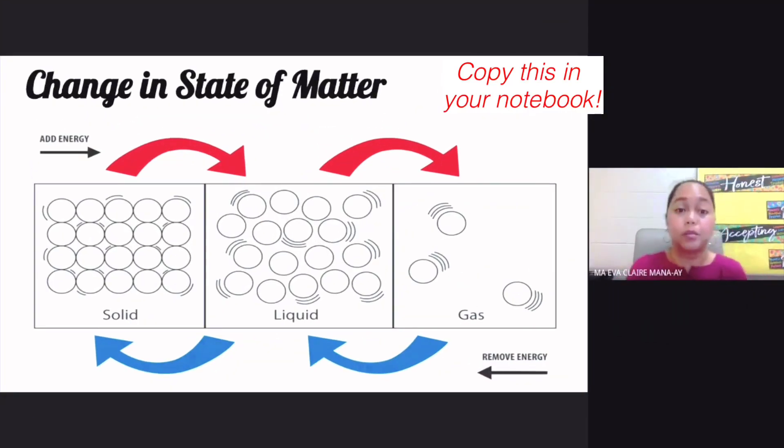Matter is anything that occupies space and has mass. So that means matter is anything that occupies space, which means that it has volume, and also it's got mass.